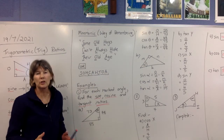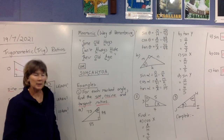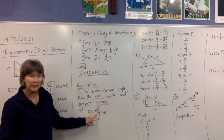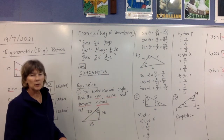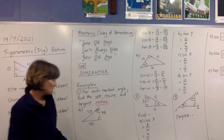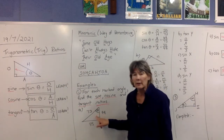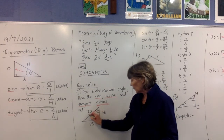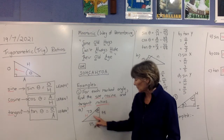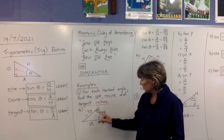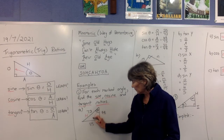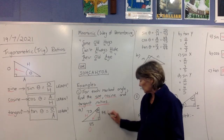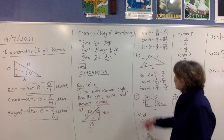Now we're just going to practice using these. So in this first example, it says for each marked angle — our marked angle here is theta — find the sine, cosine, and tangent ratios. When we look at this triangle for theta, the first thing you should do is get your red pen and start labelling the sides. Our hypotenuse is that one because it's opposite the right angle. Our opposite side is opposite the angle given — we write O for opposite — and the one that's left must be the adjacent side.